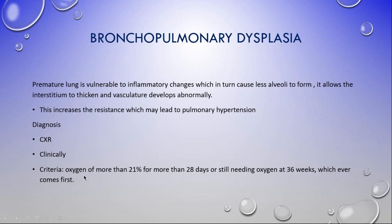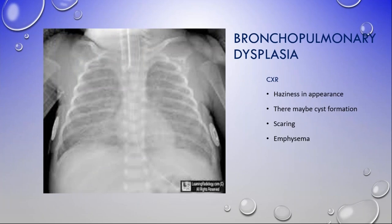Even a baby born at 35 weeks who is still on oxygen on day 21 would be considered to have BPD. On chest x-ray, BPD has a hazy appearance; there may be cysts or bullae, which are pockets of exudate that can become infected — this carries a poor prognosis. The scarring presents with an emphysaemic picture. The baby remains intubated and you can see aerobronchograms, with the diaphragm slightly flattened.